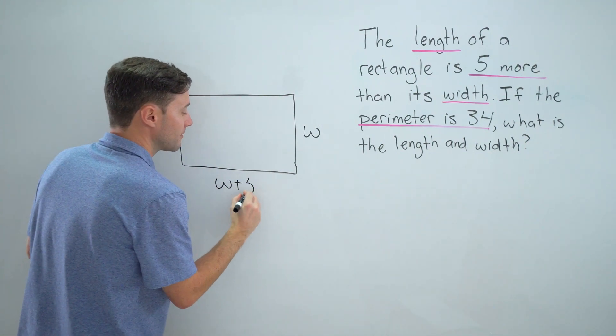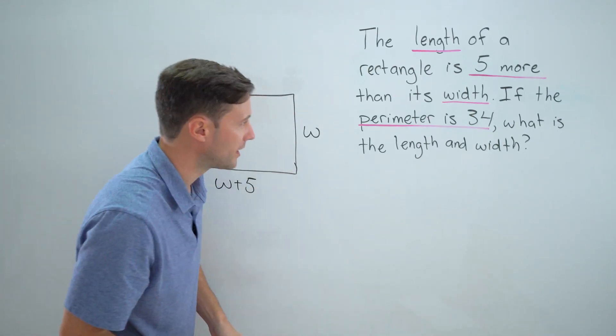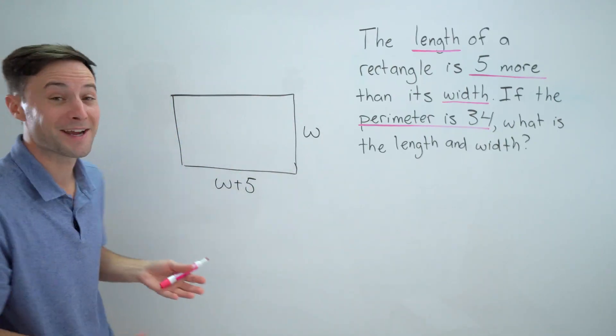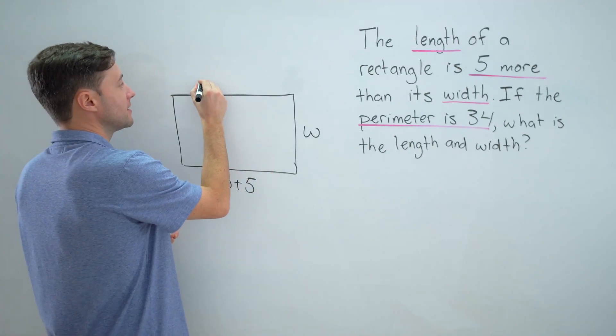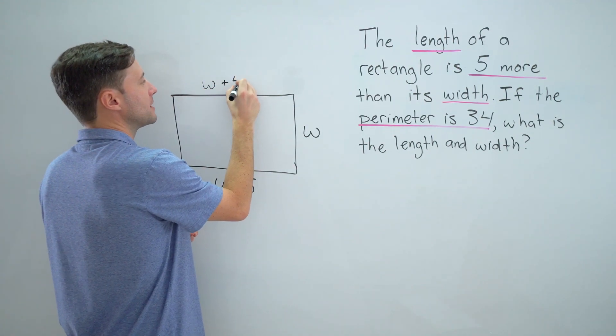There is my length, there is my width. If this is w plus five, obviously this is also w plus five because it's a rectangle. And if this is w, this is also w.